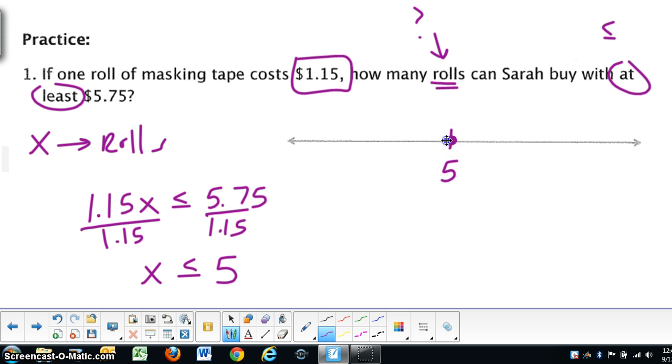on the graph itself, we're going to fill in the 5, and the closed dot represents that it will be included, the 5 rolls, and anything less than that. Okay, so let's go on to the next one.